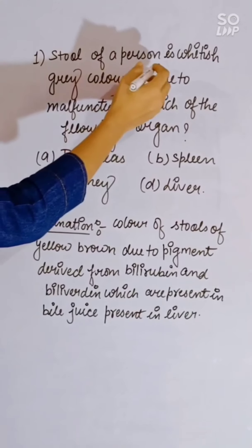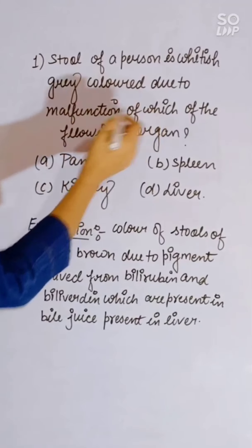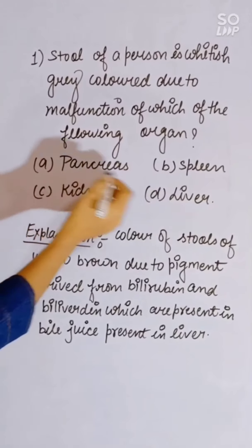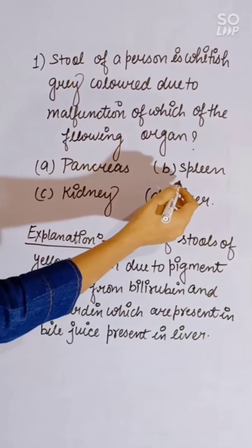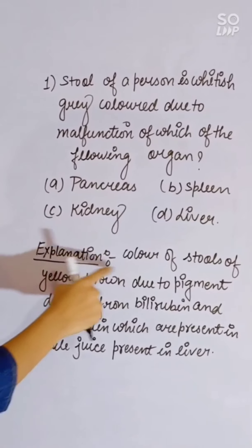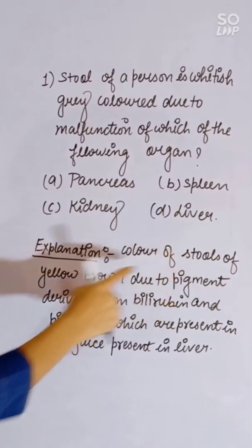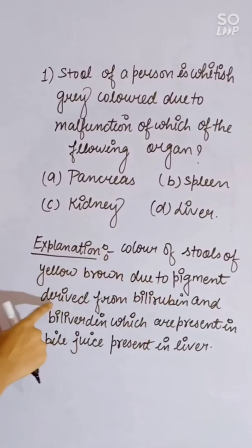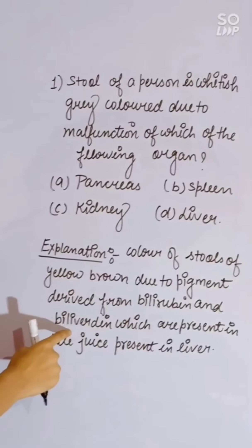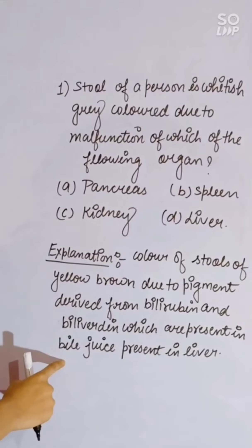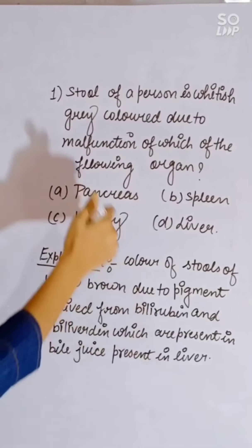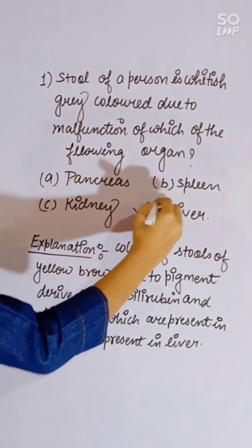The stool of a person is whitish-grey in colour due to malfunction of which organ? Options: pancreas, spleen, kidney, or liver. The yellow-brown colour of stool is due to the pigment derived from bilirubin and biliverdin, which are present in bile juice produced by the liver. Correct answer is liver.